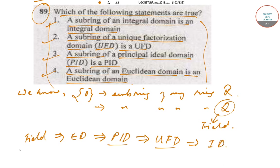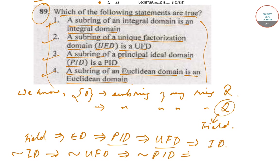Similarly, if something is not an integral domain, that will imply it is not a unique factorization domain UFD. And if it is not a UFD, then it will imply that it is not a PID. And if it is not a PID, that will imply it is not a Euclidean domain. And that will imply that it is not a field.